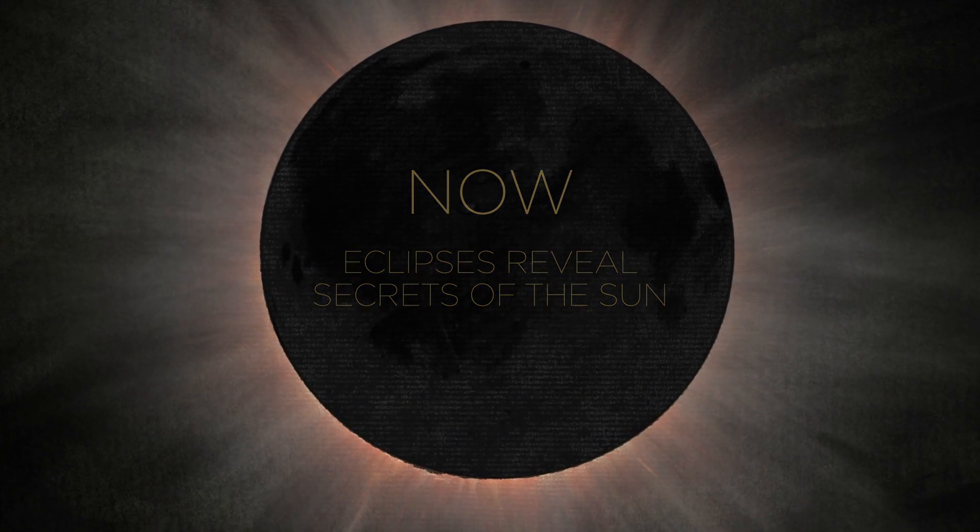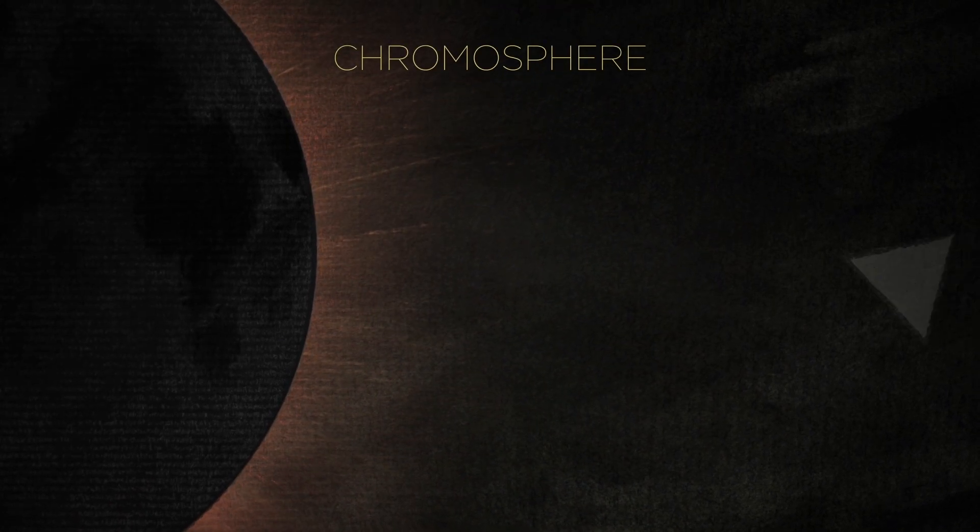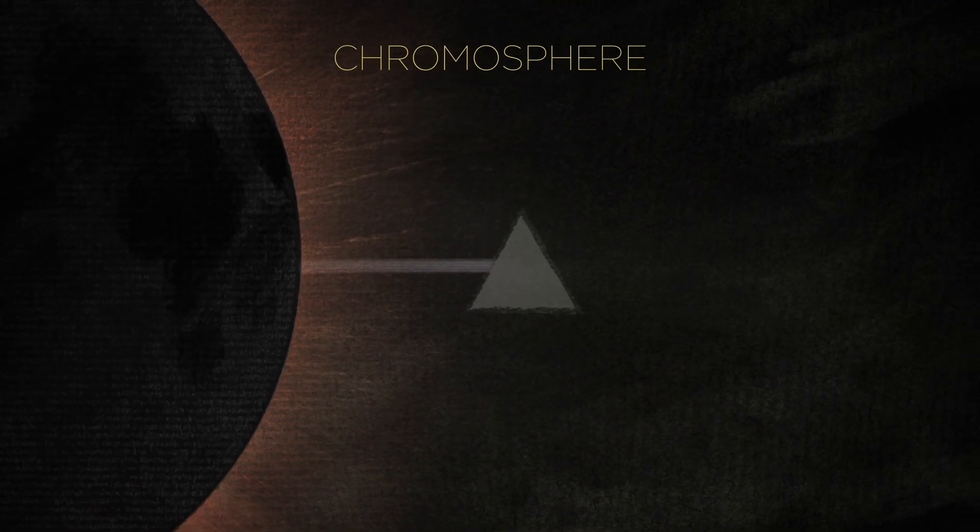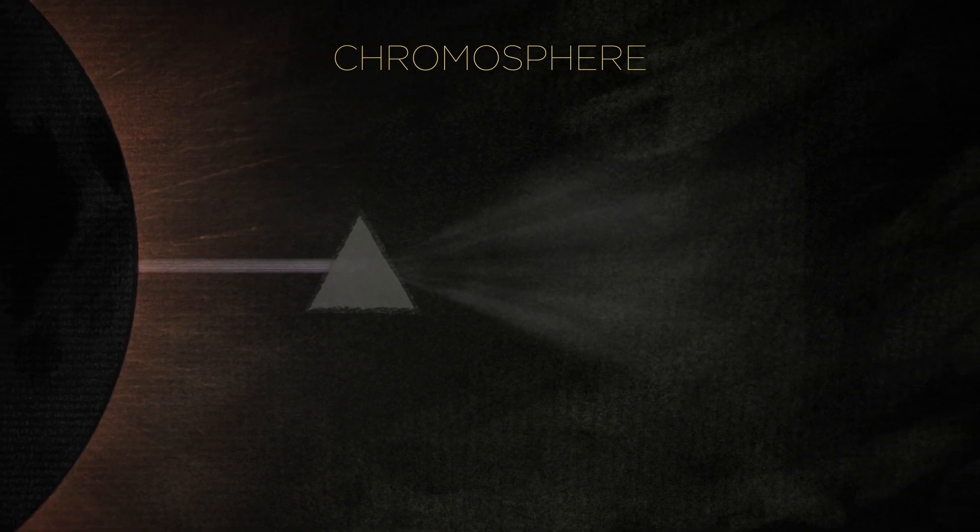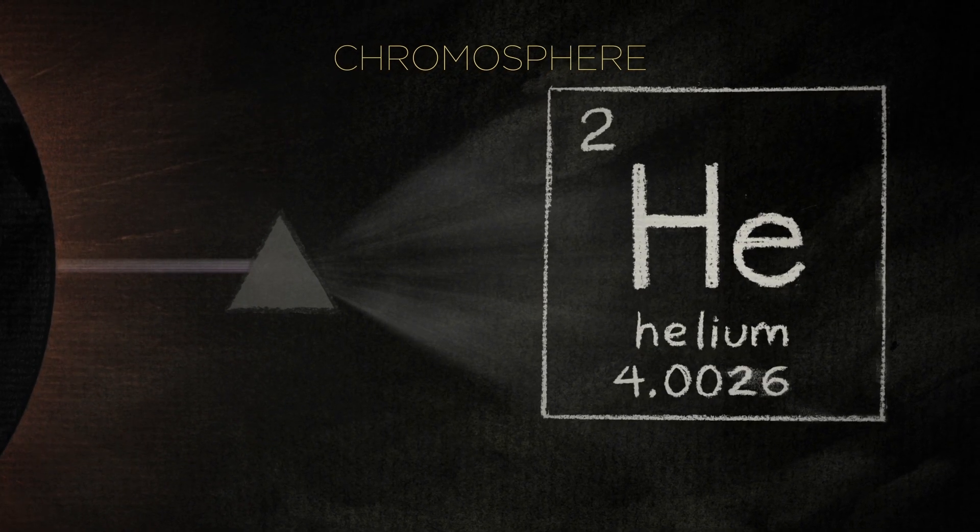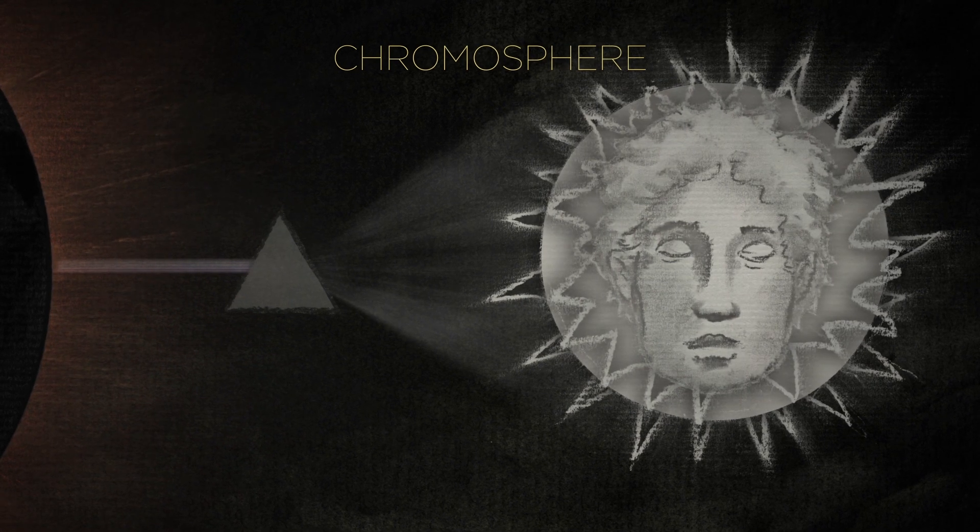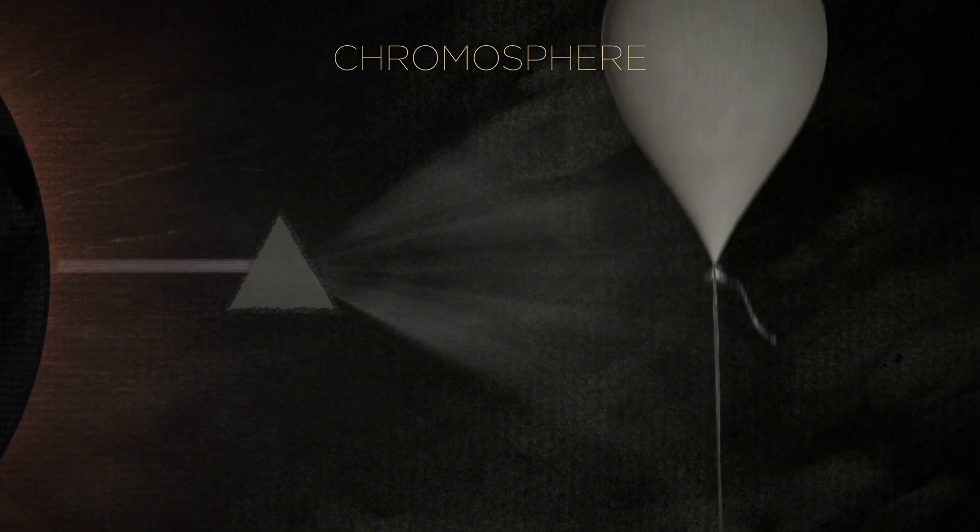During a solar eclipse, you can see the sun's fiery atmosphere. Here's the reddish chromosphere. In 1868, scientists studying the light of the chromosphere found evidence of an unknown element. They named it helium, after the Greek sun god Helios. It took another 27 years before someone discovered helium on Earth.